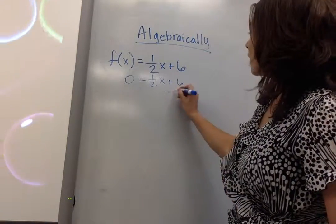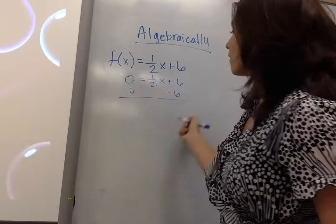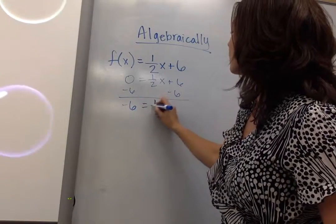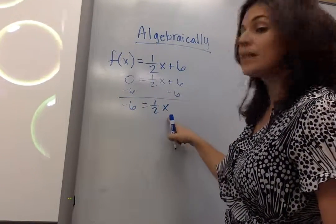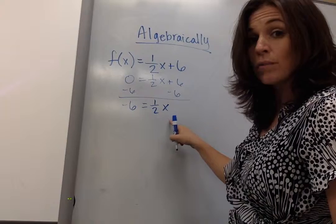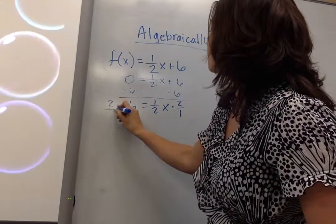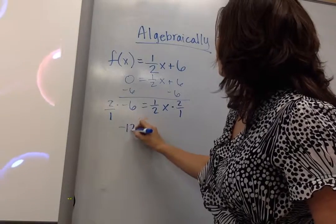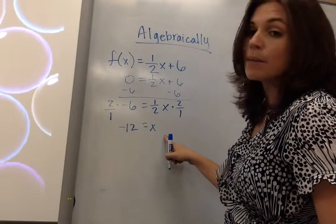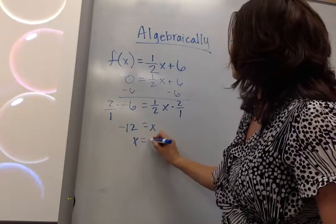I subtract 6 on both sides, additive inverse. I get negative 6 equals 1/2 x. To get x by itself, I use the multiplicative inverse, so I multiply both sides by 2 over 1, and I get negative 12 equals x.